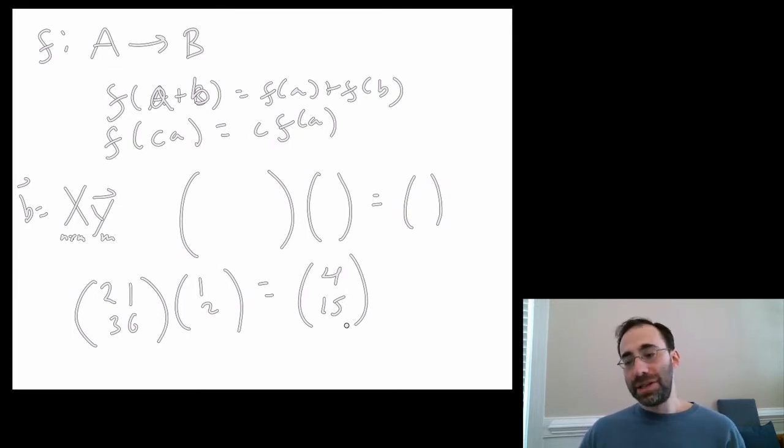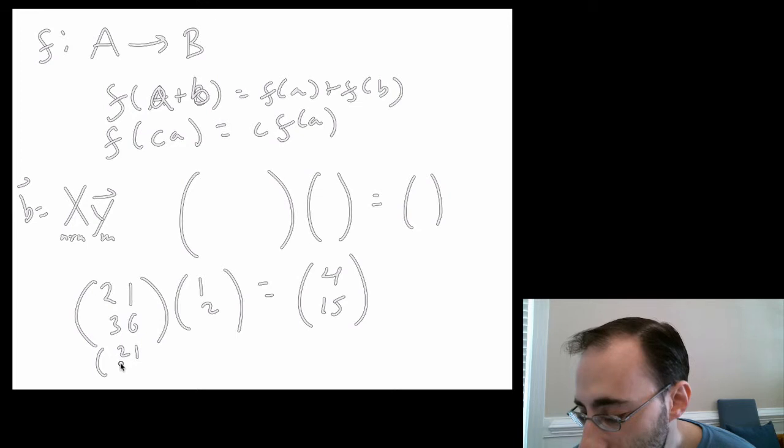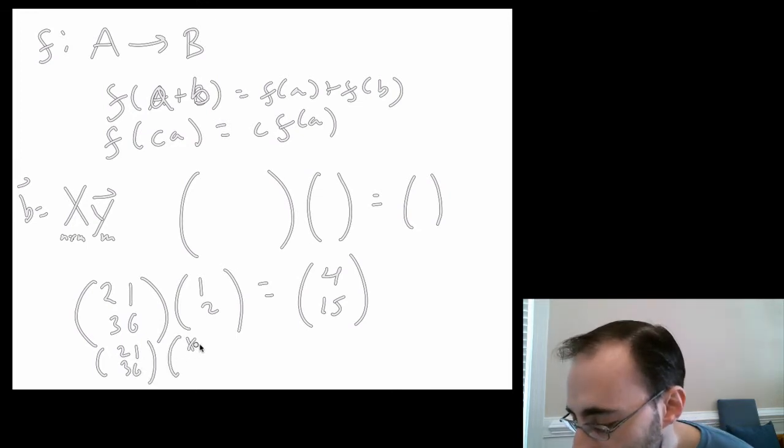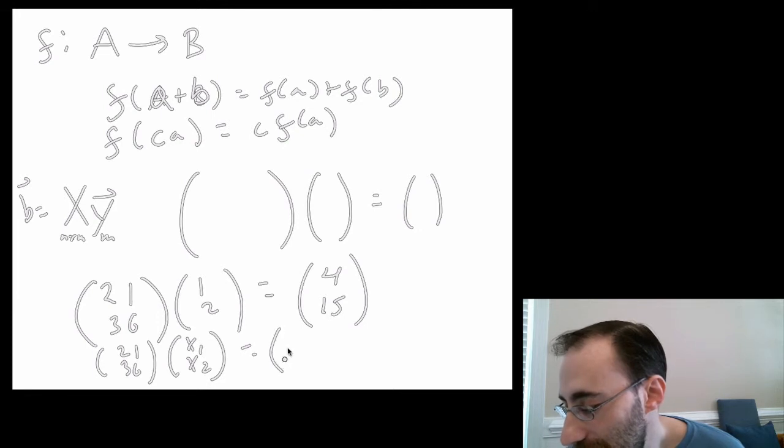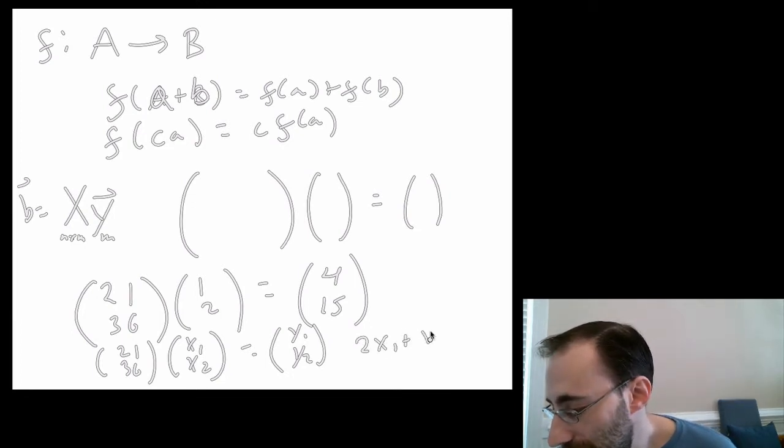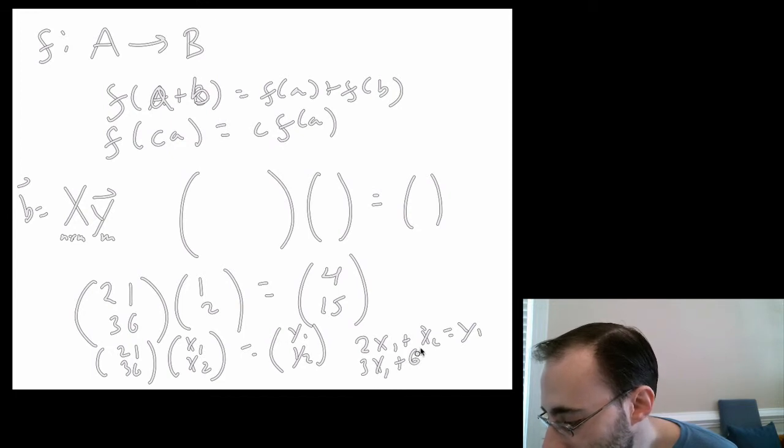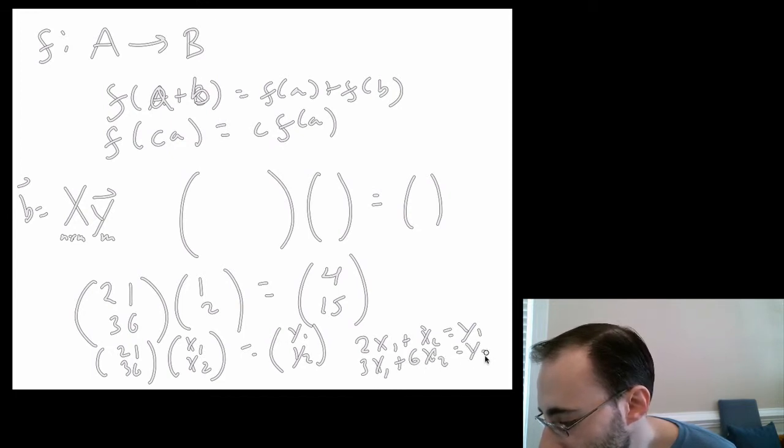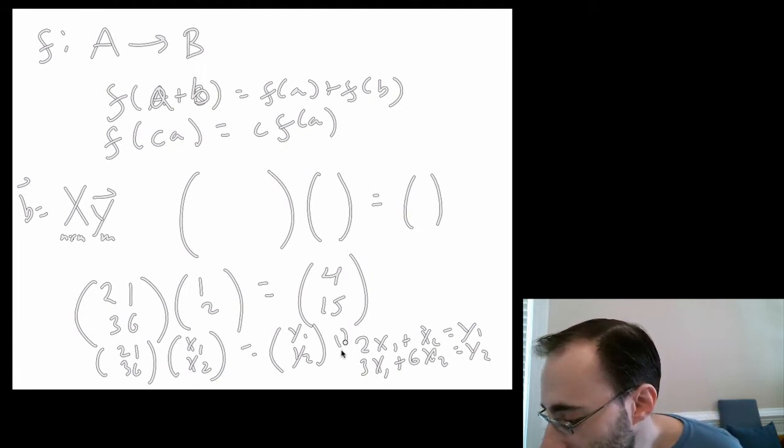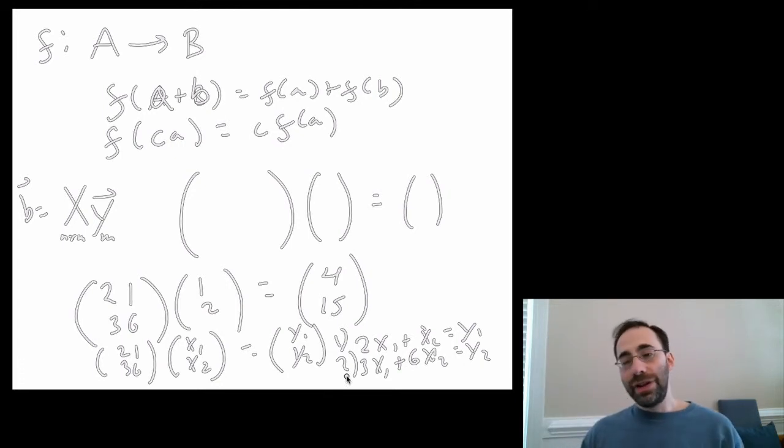That can also represent something. So let's replace that 1, 2 with x1 and x2. And replace this thing with y1 and y2. Well, then we get the expression 2x1 plus x2 equals y1. Use the exact same logic as before. And 3x1 plus 6x2 equals y2. So what we have is a system of equations. Here's equation 1 and here's equation 2. And note, these are linear equations.